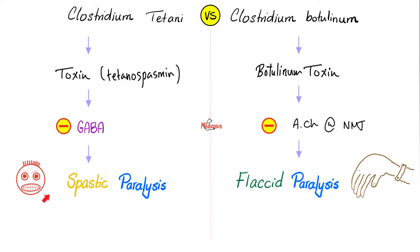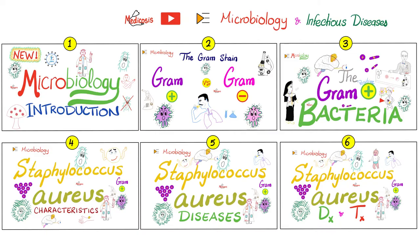Risus sardonicus versus droopy eyelids. Trismus versus diplopia. Stiff facial muscles versus floppy baby syndrome. Opisthotonos versus weak cry and hypotonia. Please watch the videos in this playlist in order.